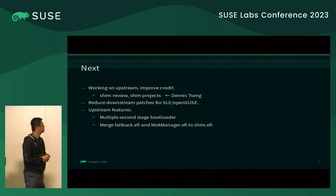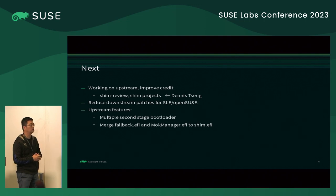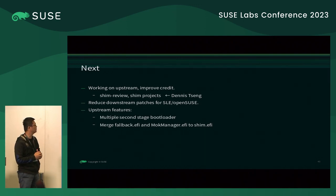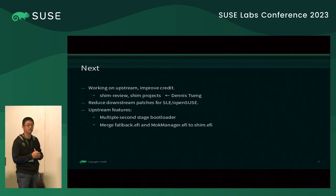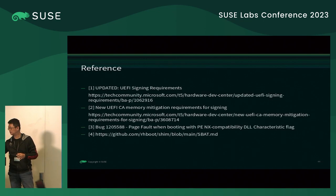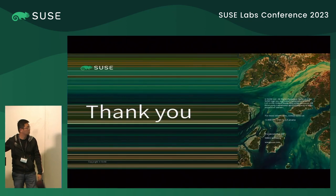Optional future features: we are trying to support multiple second-stage bootloaders — currently only GRUB2 is supported — and then merge the fallback and MOK manager EFI into the SHIM. The EFI is for TPM measurement. Here are some reference documents. Thank you.